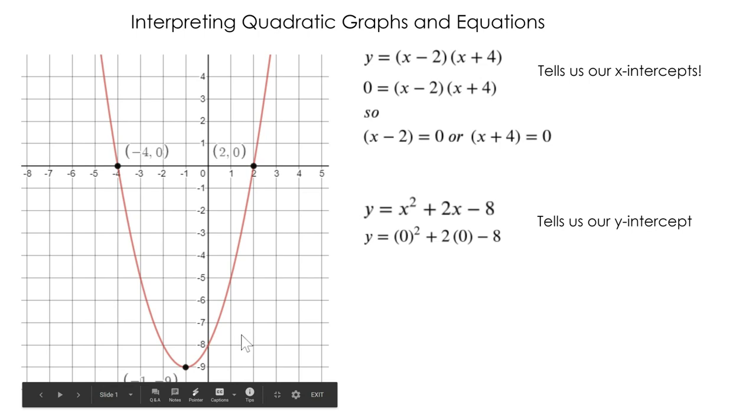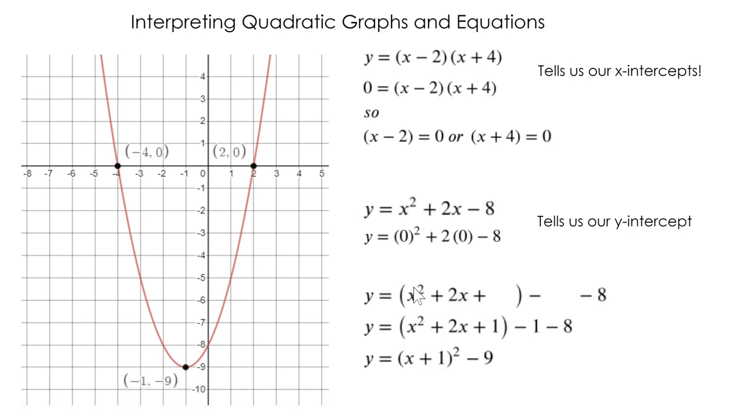I want to make sure you remember how to complete the square. When I complete the square, I take my standard form and I use my first two terms to create my square. I have a blank here for the constant number that completes my perfect square and I'm going to subtract that number as well so I do not change my equation, and my negative 8 is still hanging out over here.